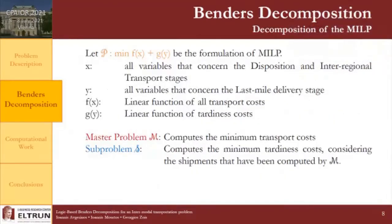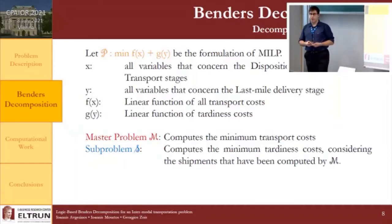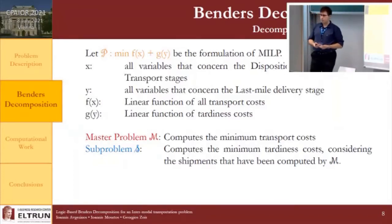We now proceed to the logic-based Benders decomposition algorithm. Let P be the MILP formulation just described. We consider two groups of variables: group x, covering the first two stages, and group y, covering the last-mile delivery stage. The objective function of P equals the sum of functions f and g, which are linear cost functions of variables x and y respectively. Problem P is decomposed into master problem M, which computes minimum transport costs, and sub-problem S, which computes minimum tardiness costs given shipments from a feasible master problem solution.